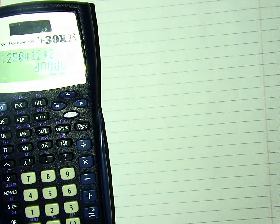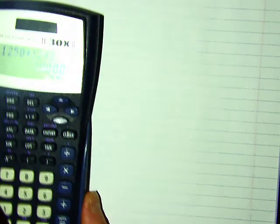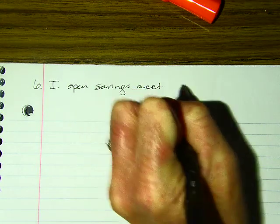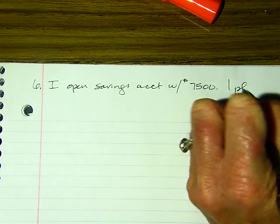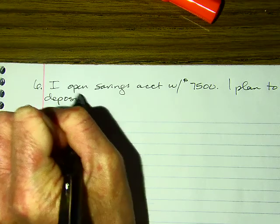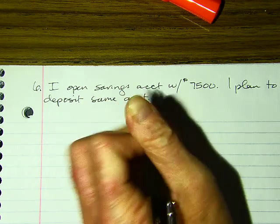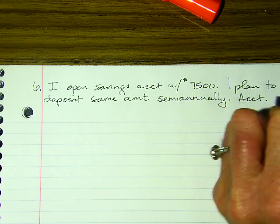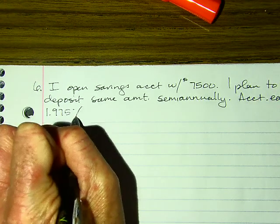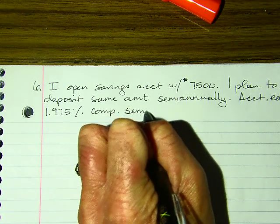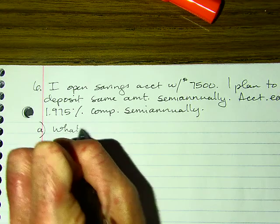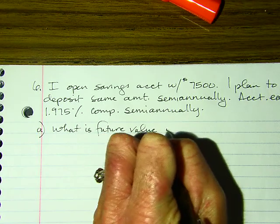Let's do one last problem. I open a savings account and plan to deposit $7,500 semi-annually. The account earns 1.975% interest, also compounded semi-annually. What is my balance — the future value — in 10 years?